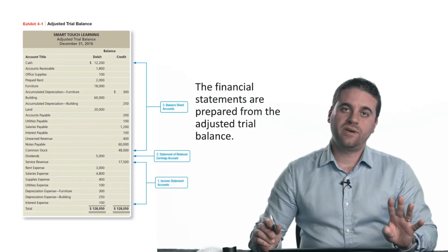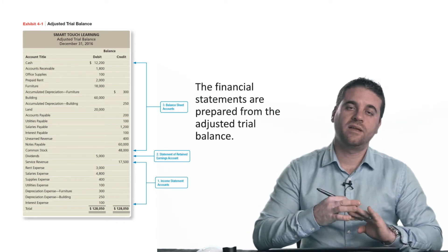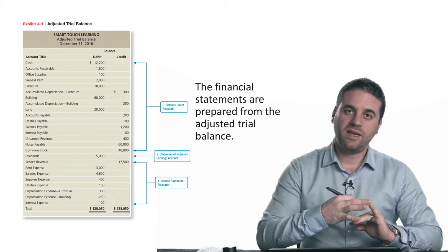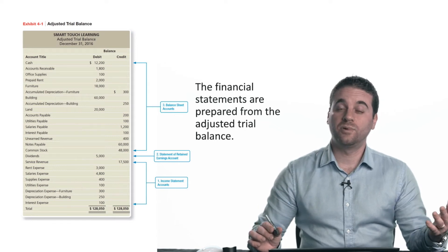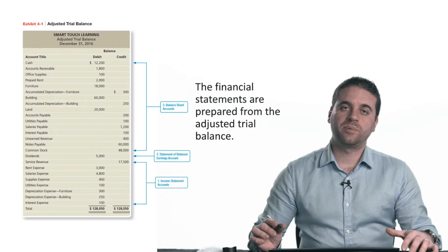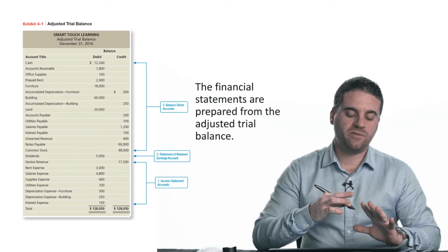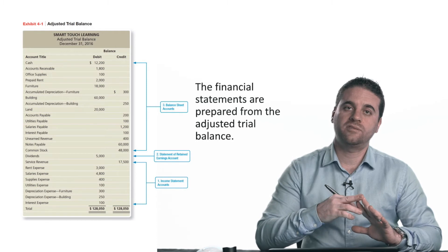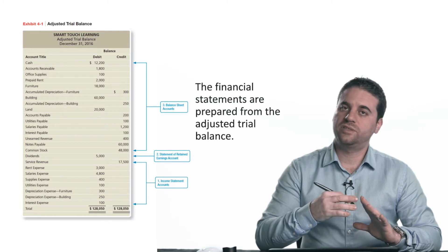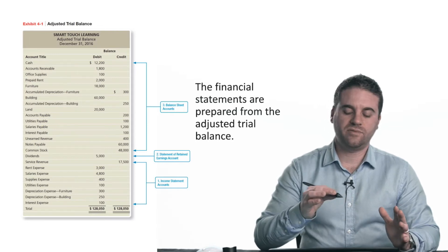There are four financial statements: the income statement, retained earnings statement, balance sheet, and cash flow statement. The cash flow statement we're not going to prepare — we'll do that later in Chapter 12. What we will prepare today is the first three, and they have to be prepared in a specific order. The first is the income statement, second is the retained earnings statement, and after that is the balance sheet. You cannot switch the order, and you will see in this video why it's not going to work if you flip them.